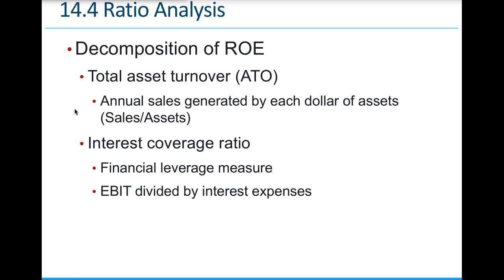Another example: a pizza oven that takes an hour to cook a pizza can't sell many pizzas. But upgrading the oven to cook at higher temperatures and faster means you can sell 10 times as many pizzas in a day — making the asset more effective and generating more sales. We always want to think about how assets can generate more sales, whether by operating them faster, longer, or more efficiently with fewer defects.